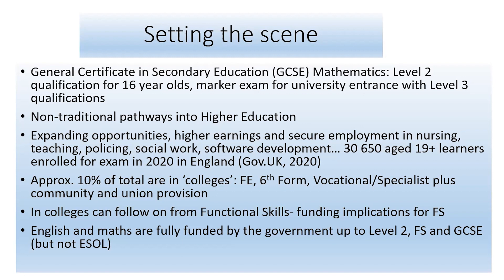In colleges, it can follow on from functional skills provision, which is a lead-in to the GCSE mathematics provision. But colleges are being moved away from that because the funding for functional skills is lower than it is for GCSE. So colleges are being encouraged to put everybody — regardless of their ability — in front of this GCSE Mathematics exam, even though it includes a lot of fraction work, algebra, and geometry which they may not be ready for at all.